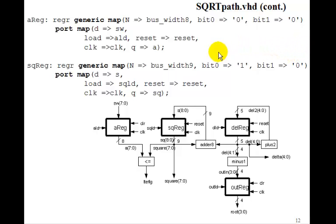And then we need to port map the registers. A register is going to have a bus width 8, and bit 0 and bit 1 are 0. So on reset, it'll clear it to 0. And then we just wire up load to A load, and Q goes to A. For the square root register, the load will be SQ load. This is a 9-bit, so N is going to be set to bus width 9. And on reset, we want the initial value of square to be 1, so we'll set bit 0 to 1 and bit 1 to 0. So this will be a 1 on reset, which is what we want. And Q goes to square.